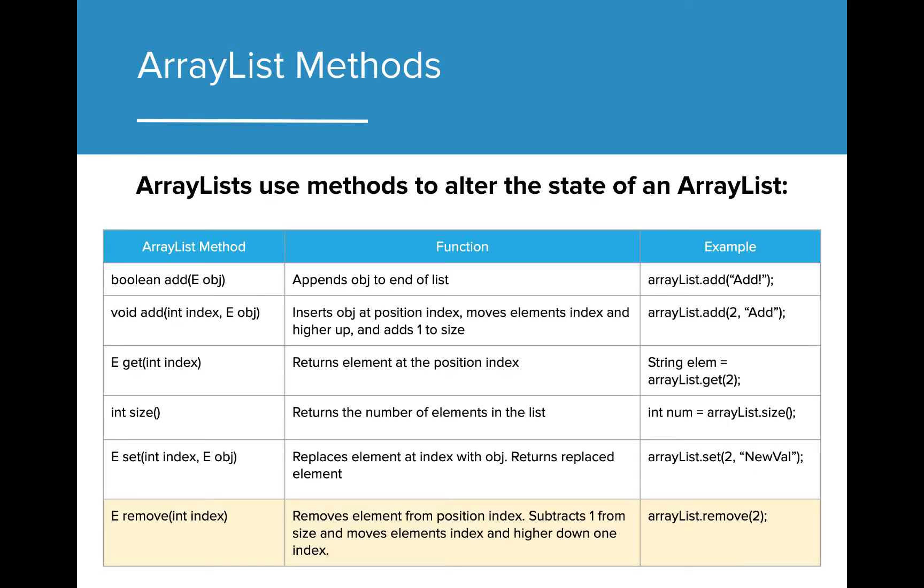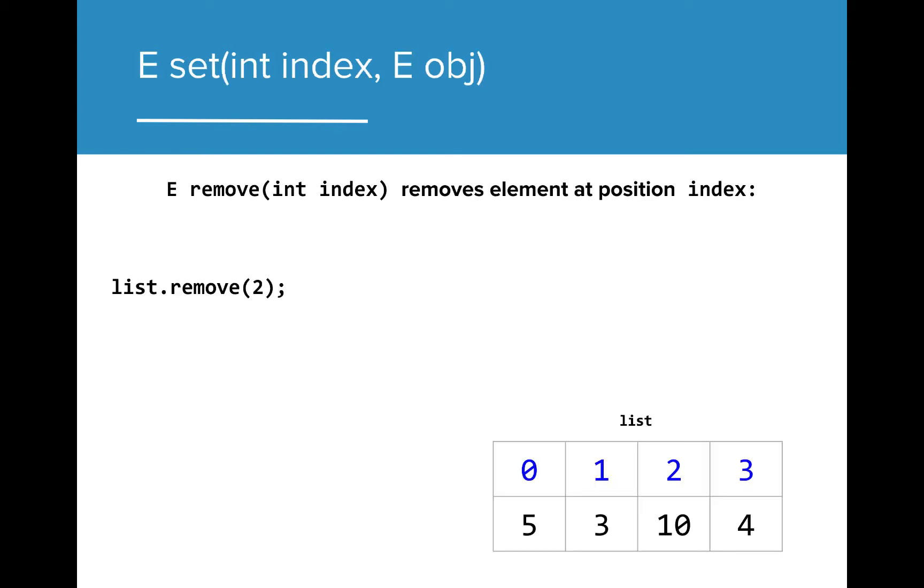Lastly, we can also remove elements from an ArrayList. The remove method removes an element at the specified index. In this example, we are removing the value currently housed in index 2. When the item is removed, the values at index 3 and higher are then shifted down one spot to condense the size of the ArrayList.